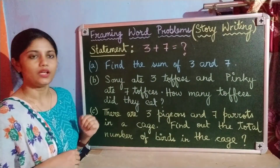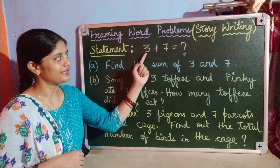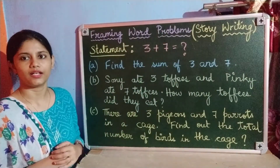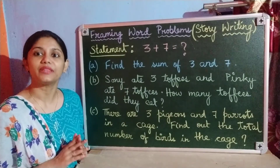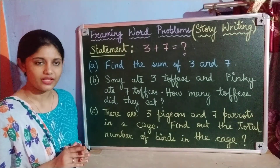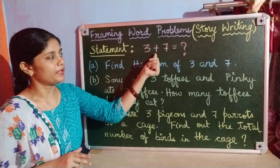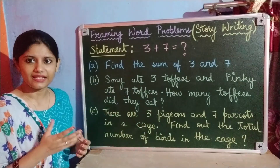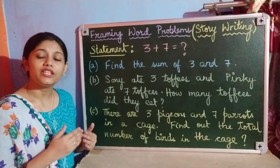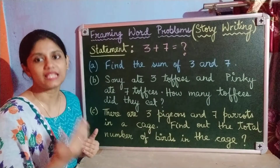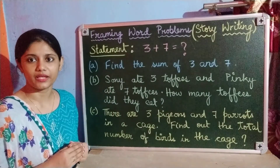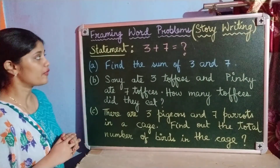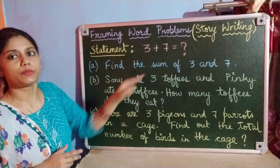Here, children, you can see on the board. Ma'am has written a statement: 3 plus 7 is equal to question mark. This question mark means we need to find out what 3 plus 7 equals. But we will not find the sum. Instead, we will frame a word problem.